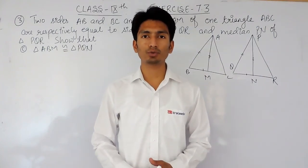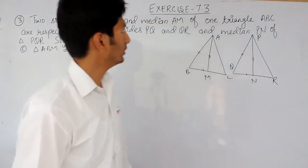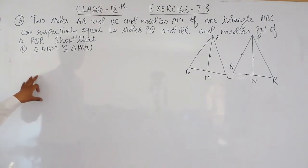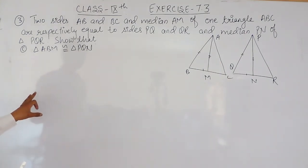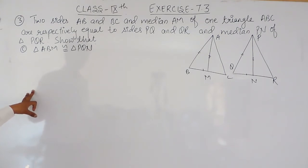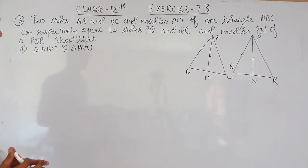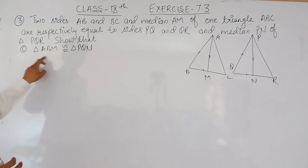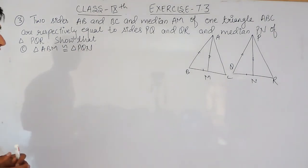Hello everyone, we are from True Maths and in this video we are going to solve question number three of exercise 7.3. This question has two parts and in this video we are going to solve the first part. The question says: two sides AB and BC and median AM of triangle ABC are respectively equal to sides PQ and QR and median PN of triangle PQR. You have to show that triangle ABM is congruent to triangle PQN.